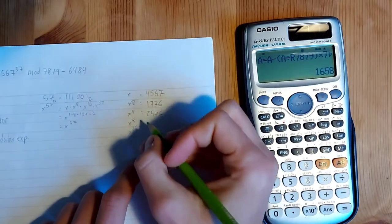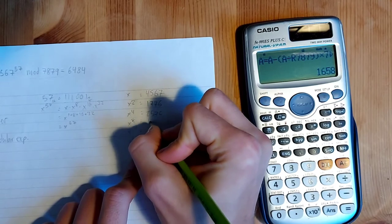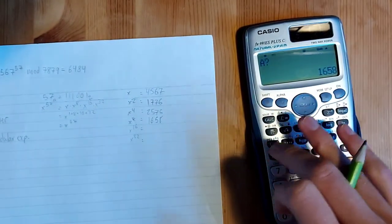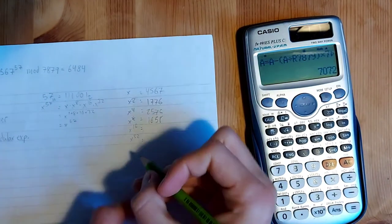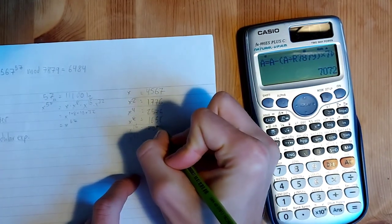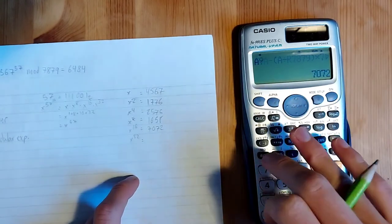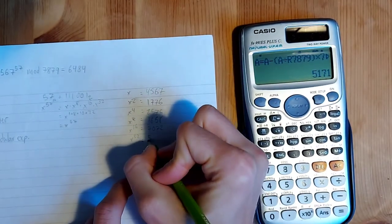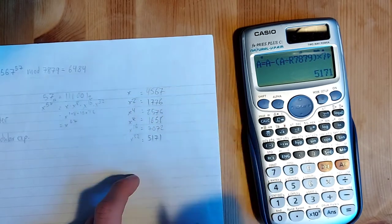Anyways, so let's go calc, recall A squared, hit enter. It's going to tell us 2576. Calc, recall A squared, 1658. Calc, recall A squared, 7072. And one last one, 5171.